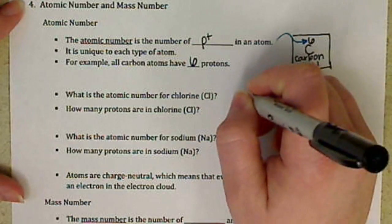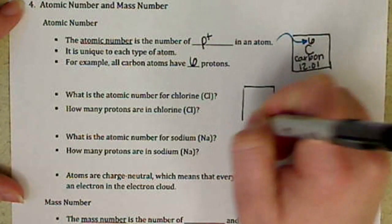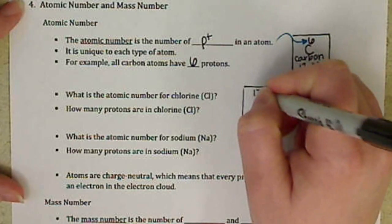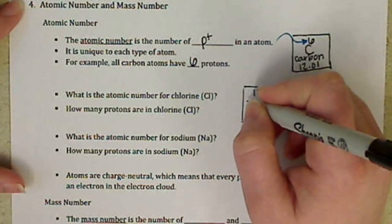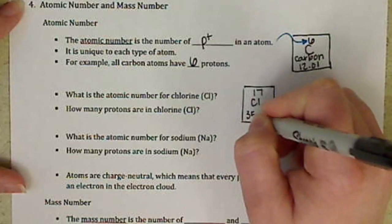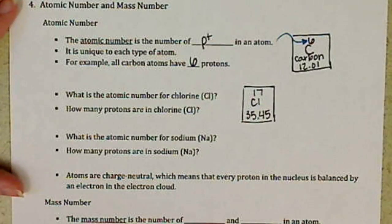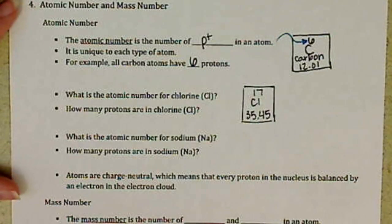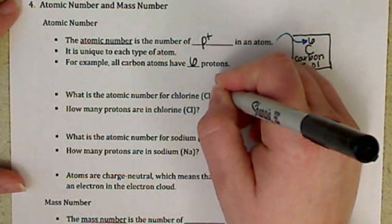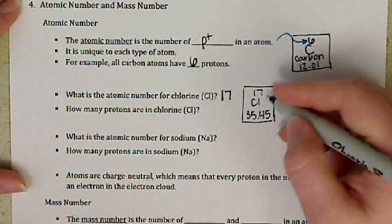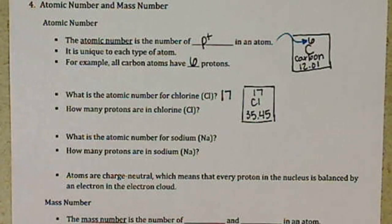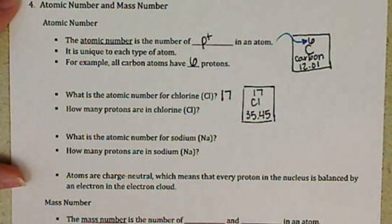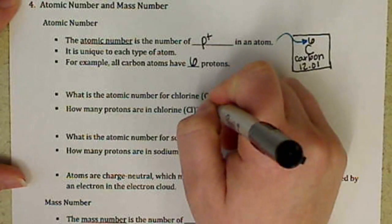So if we look at chlorine, looks something like this. What's our atomic number for chlorine? Hopefully you're yelling at your screen, 17, right, stemming from the whole number that's above our symbol. So how many protons are in chlorine? 17.